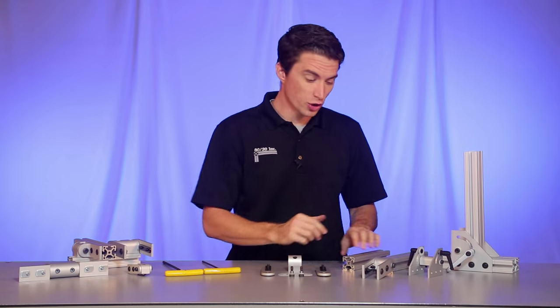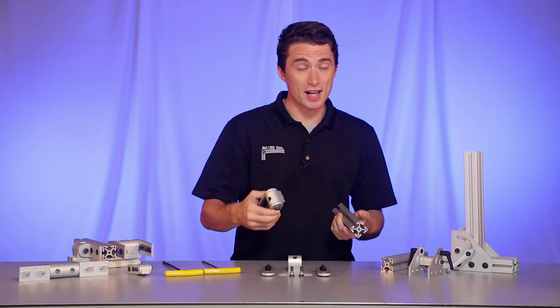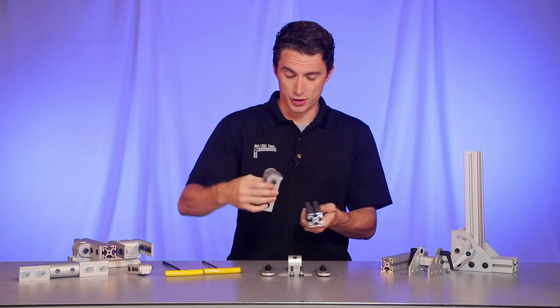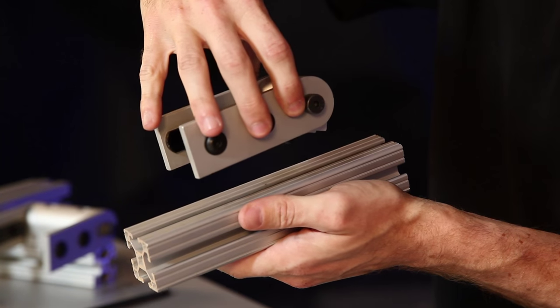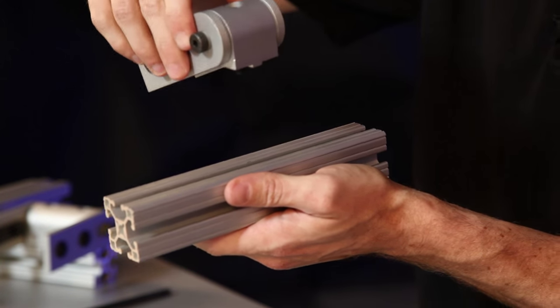Now before we get started, it's worth noting that dynamic pivots come in various styles and alignments, such as zero degree, which runs parallel with the bar, and ninety degree, which runs perpendicular with the bar.